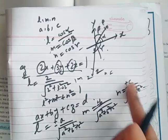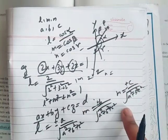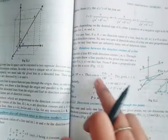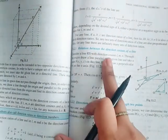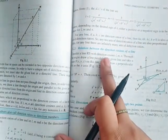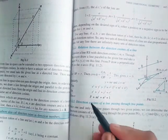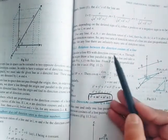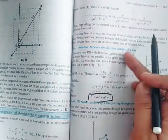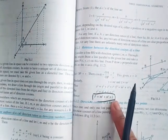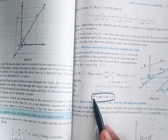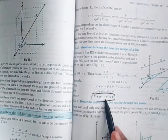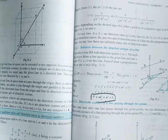In the first exercise, you have to use these concepts and give answers. Now the next topic is the relation between the direction cosines of a line — this is an already discussed topic. Direction cosines are connected with the help of this relation: l² + m² + n² = 1.